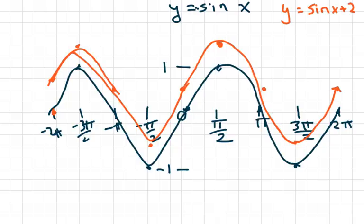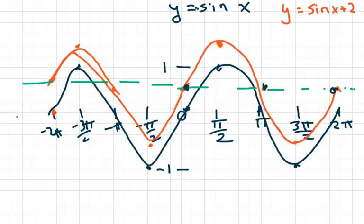That is a vertical shift up by 2, and we have a new center line at y = 2. That's why they call it the center line — the three key midpoints now rest on y = 2, as opposed to our old center line which was at y = 0. This new center line is y = 2, and that's all that is.